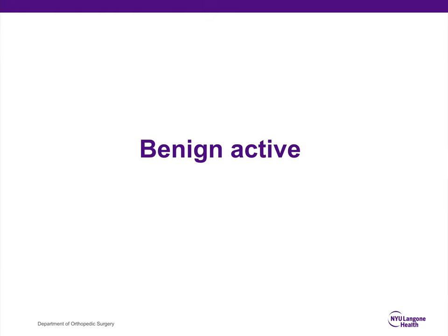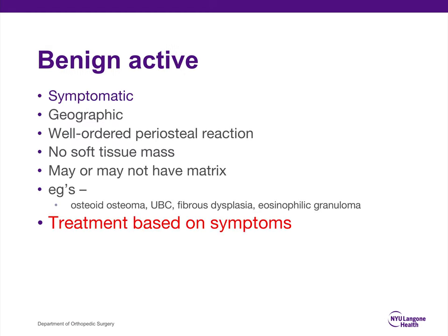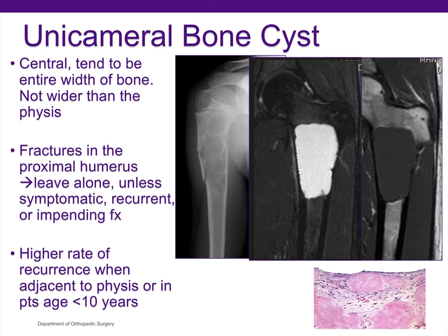The next group are the benign active tumors. These are typically symptomatic, also geographic, and can form periosteal reaction that's well-ordered. They typically do not have a soft tissue mass, and they may or may not have a matrix depending on their diagnosis. Examples of these are osteoid osteoma and unicameral bone cyst. The treatment is based on symptoms.